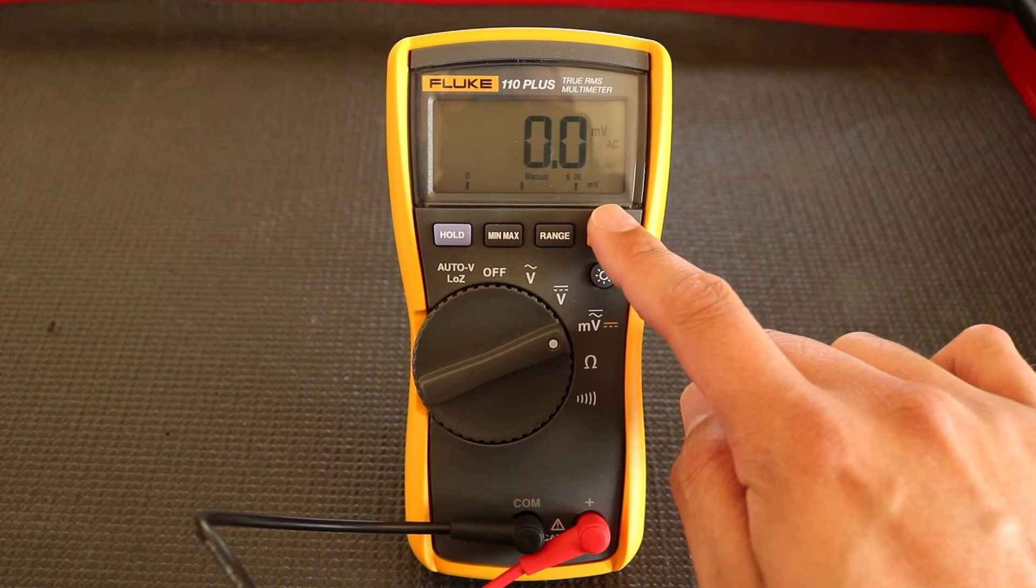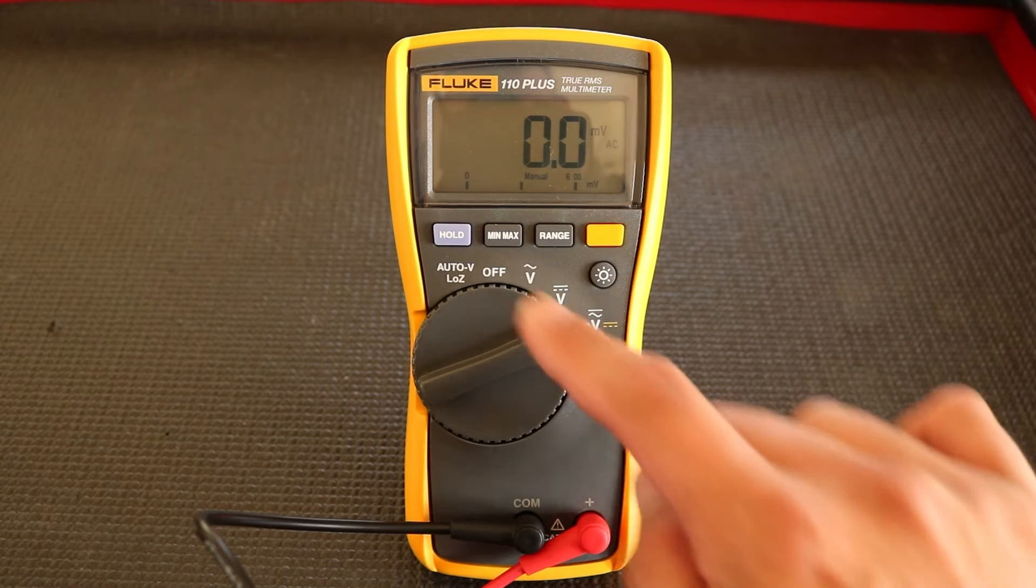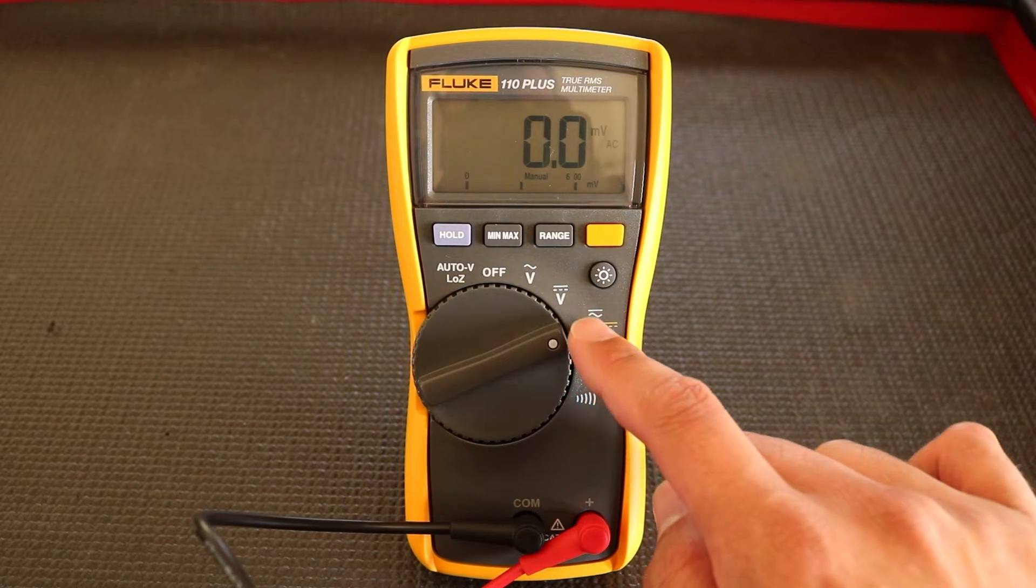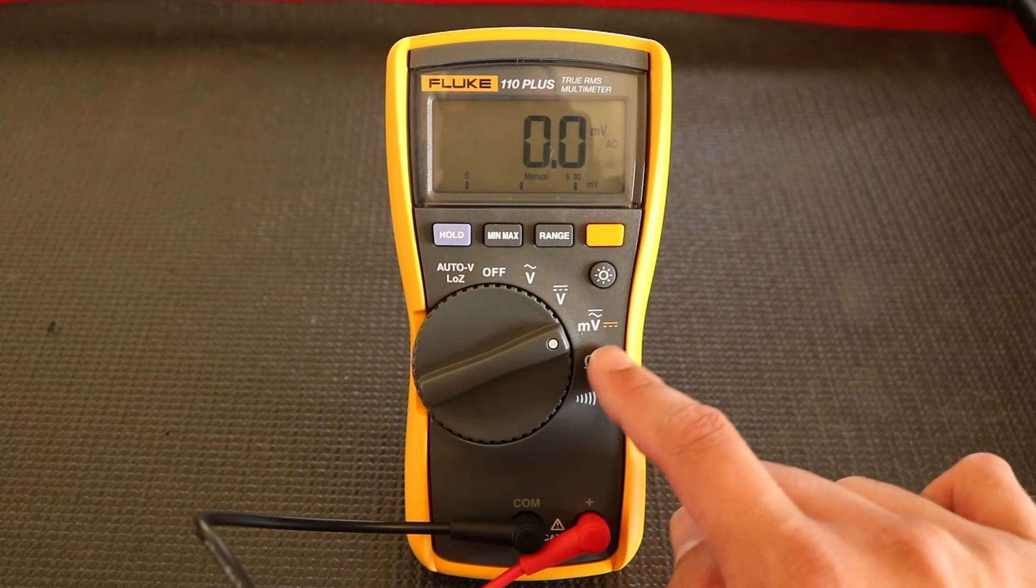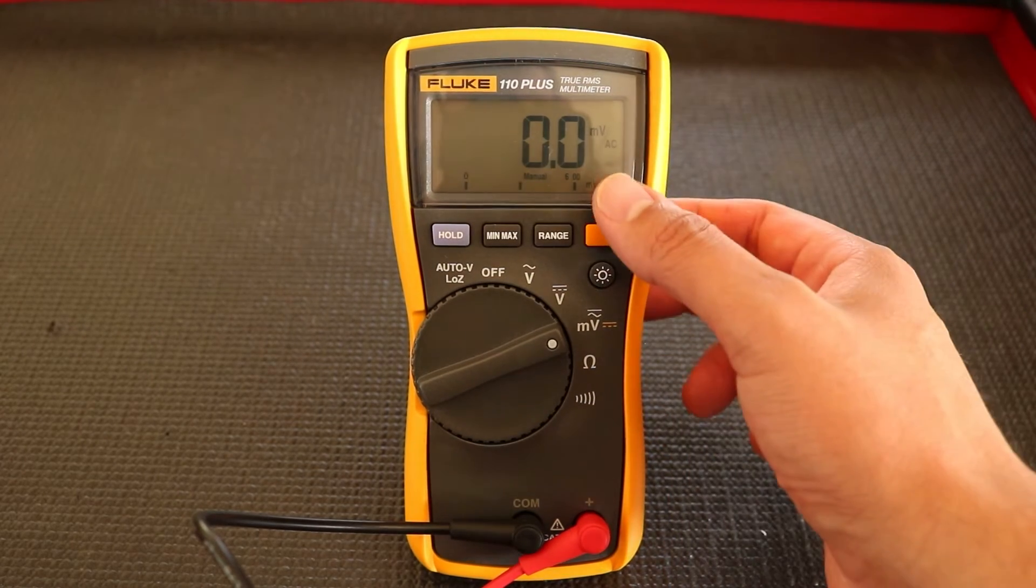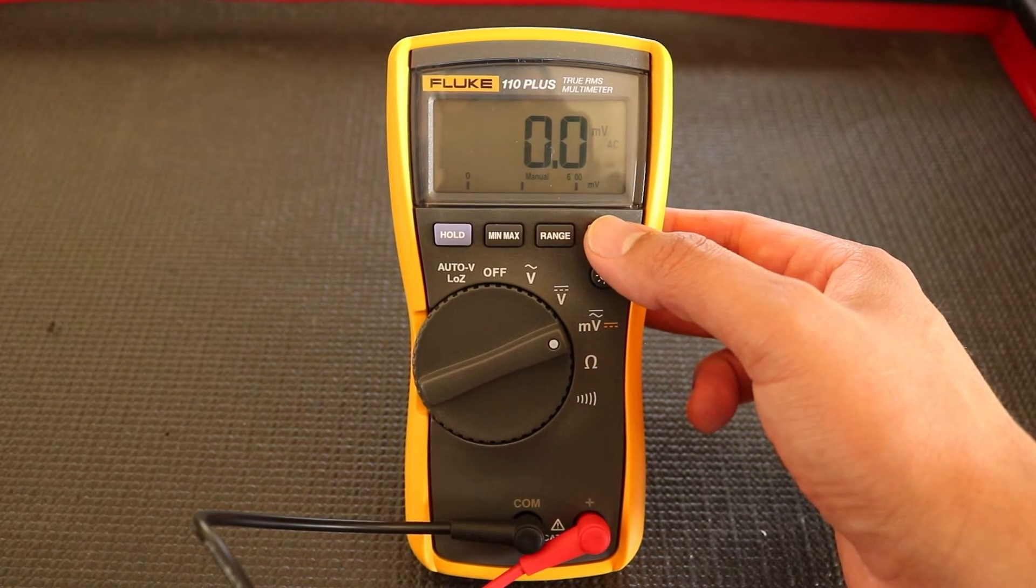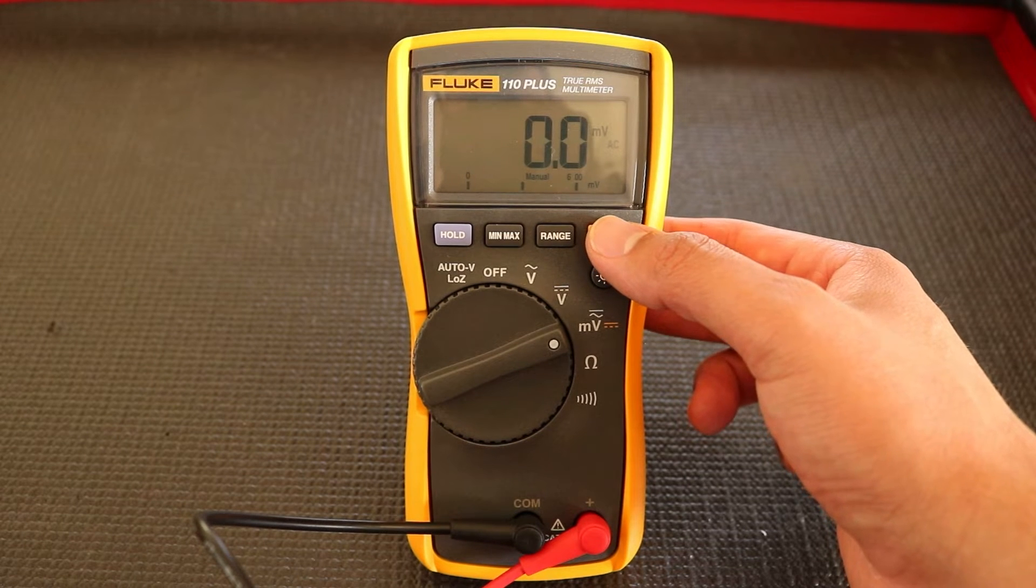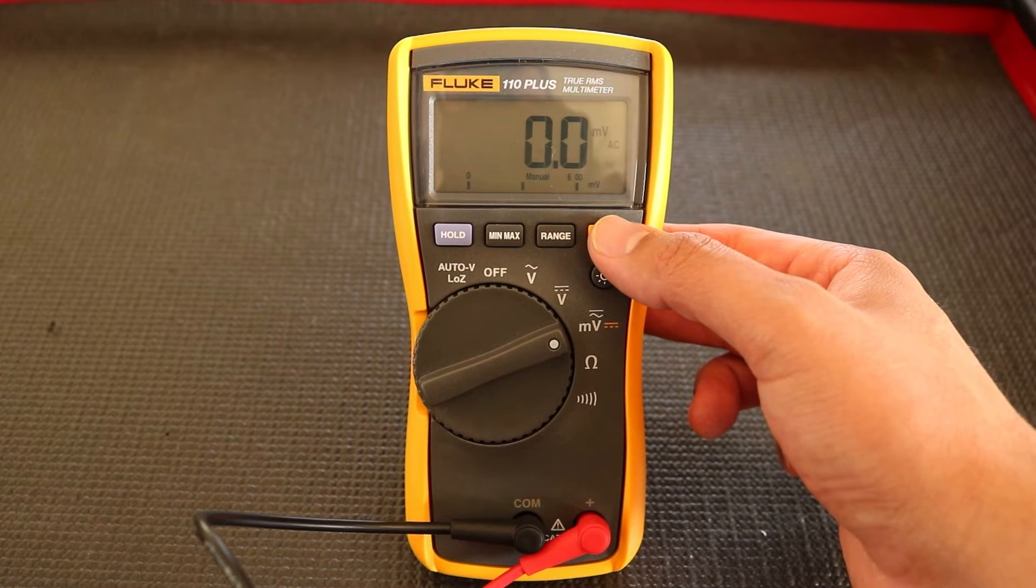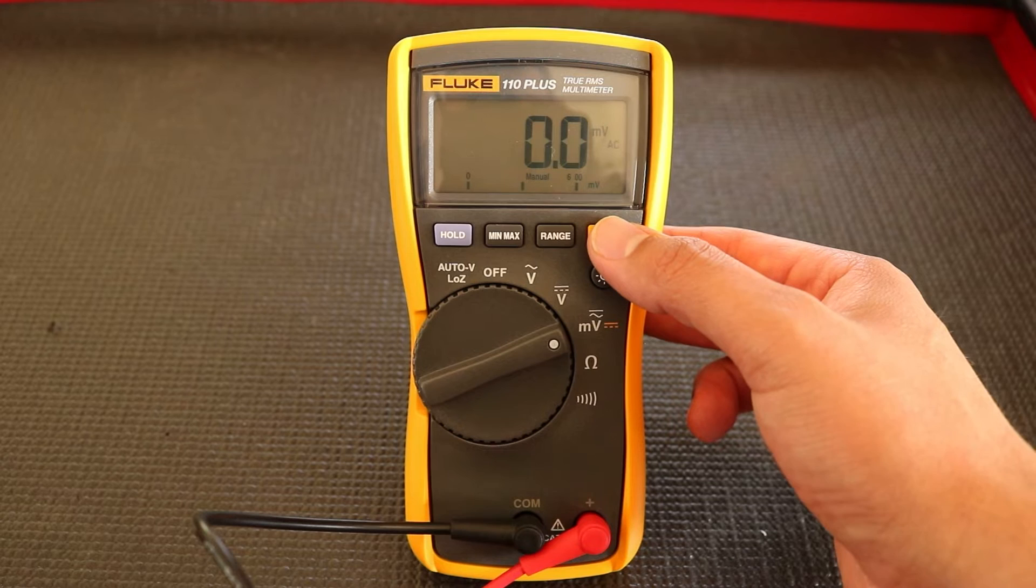The orange button is the function button. Under the rotary knob, as you can tell, you have the white functions, and then you have this single yellow one here. What this button does is allows you to shift between the two functions. So on this particular function, you have alternating current and DC current for millivolt check. So this is how you do it.